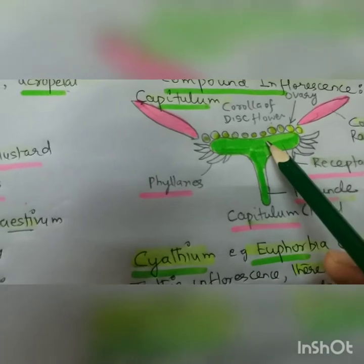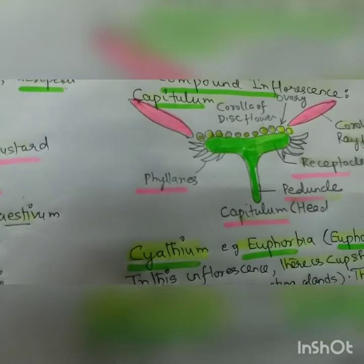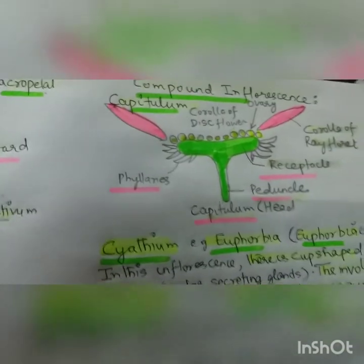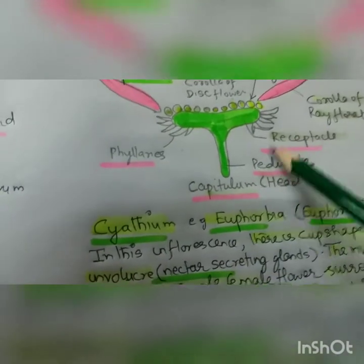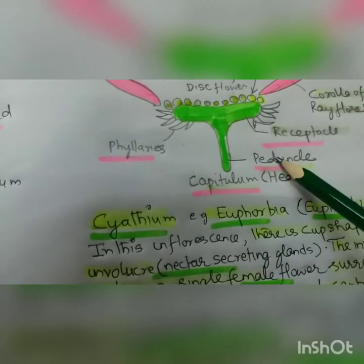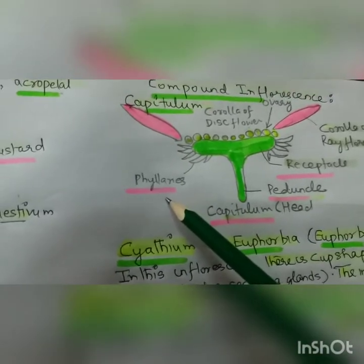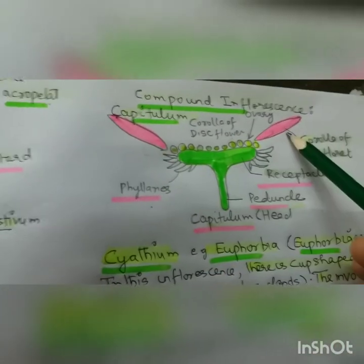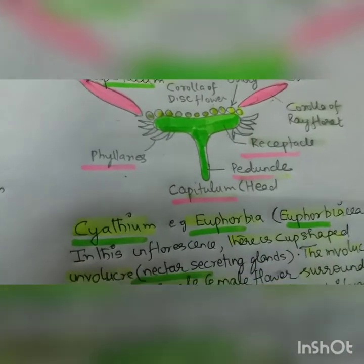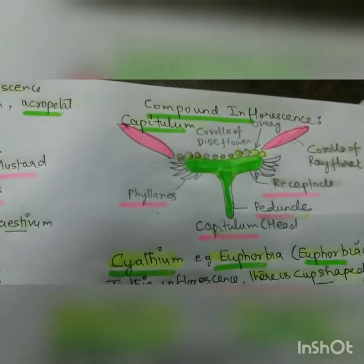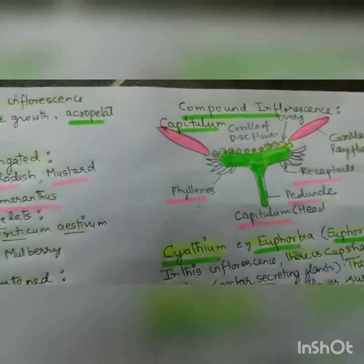Please refer to the videos of Compositae where we explained which floret is actinomorphic and which is zygomorphic. The receptacle has a peduncle, phyllaries, disc florets, and ray florets. This comes under the compound inflorescences, that is capitulum.